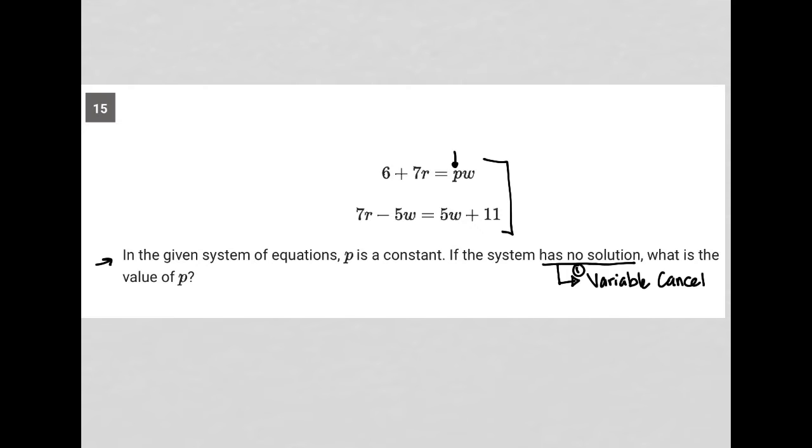Let's see what we can do. Our first equation is 6 + 7R = PW. Since P is a constant, we'll look at this structurally: we have our number, our R value, and our W value.